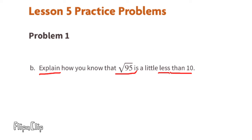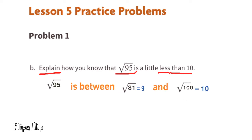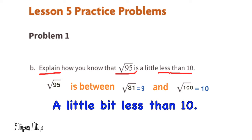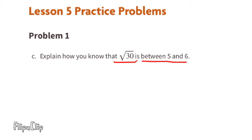Problem 1b: Explain how you know that the square root of 95 is a little bit less than 10. We know that 9 times 9 equals 81 and 10 times 10 equals 100, so the square root of 95 will fall between the square root of 81 and 100. Since 95 is much closer to 100 than it is to 81, we know that the square root of 95 is just a little bit less than 10.